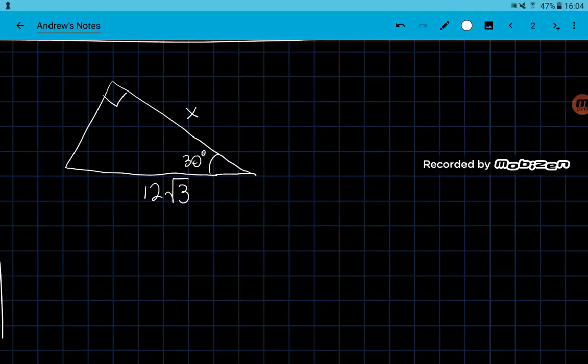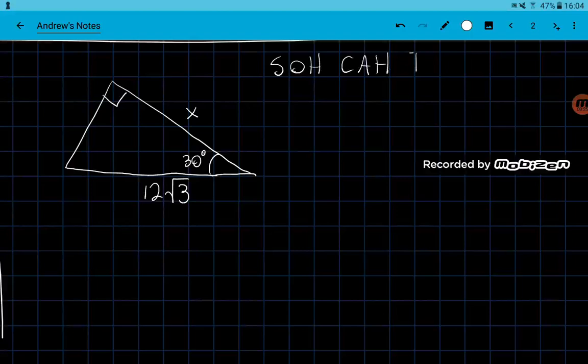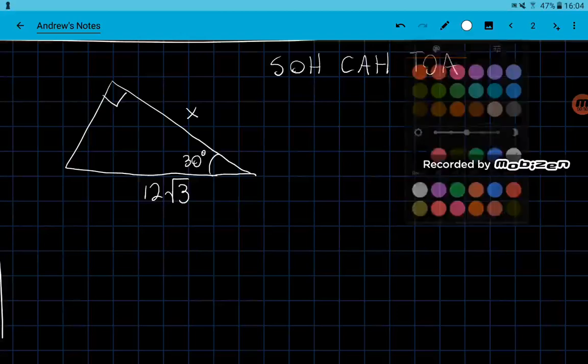So using trigonometry we should be able to figure out what to do with this problem. So the first thing is to write down our SOH CAH TOA and the next step is to identify which one of those it might be.